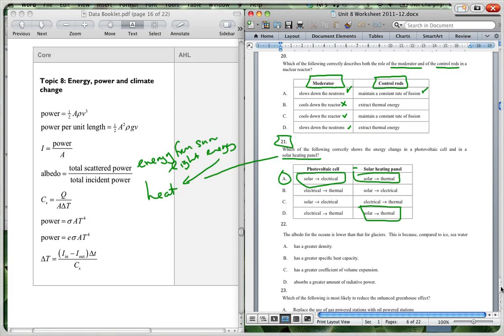Question 22. The albedo for the oceans is lower than that for glaciers. This is because compared to ice, seawater has a higher density. Well, it may have a higher density, but that's not the relationship. Greater specific heat capacity, also not relevant. Greater coefficient of volume expansion, that's not relevant. It absorbs greater amounts of radiative power. So this is relevant because your albedo is all to do with the absorption of energy from the sun, power from the sun. So D would be correct.